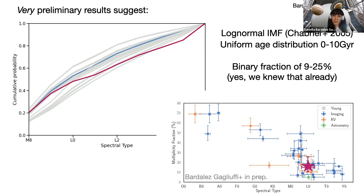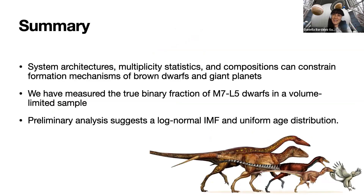In summary: system architectures, multiplicity statistics, and compositions can constrain formation mechanisms for brown dwarfs and giant planets. We have measured the true binary fraction for M7 to L5 dwarfs in a volume-limited sample. This preliminary analysis suggests a log-normal IMF and a uniform age distribution.